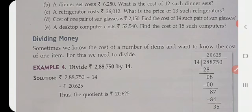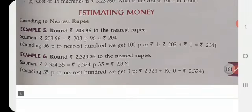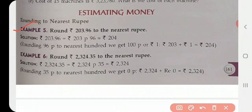Now let's see estimating money - how to estimate money. When it is 96 paisa, now here we have rounded off this sum. In Example 5, it is said ₹203.96 is to be rounded off to nearest rupee. Here you can see that it is 96 paisa.